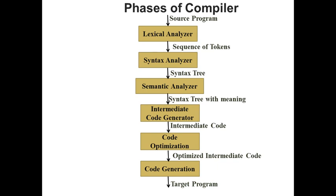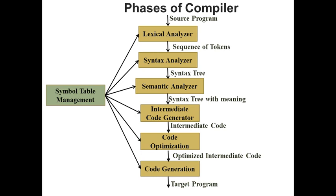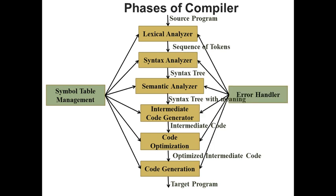It generates a syntax tree with meaning and it is given to intermediate code generator. Intermediate code generator generates the intermediate representation of source program, which is then optimized by code optimization phase. This optimized intermediate code is given to code generation to generate the target program, which is dependent on the machine. Apart from these six phases, two more activities are involved in the design of compiler. These activities are also called phases of compiler.